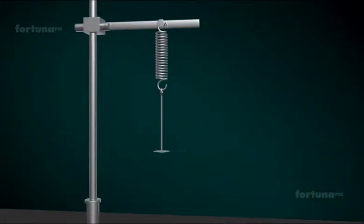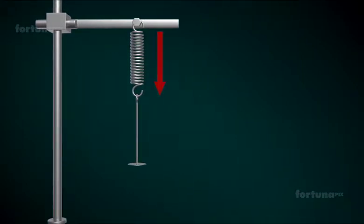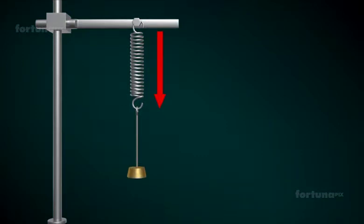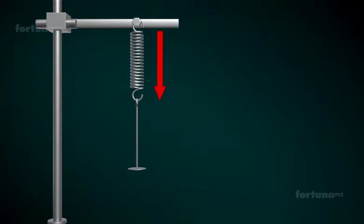Let's consider a spring that is hung vertically from a stand. If we add a weight to the spring, we can visibly observe the spring stretching. When more weight is added, the spring will stretch even further. And once the weights are removed, the spring will return to its original length, demonstrating the property known as elasticity.